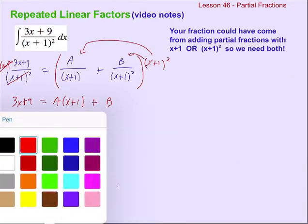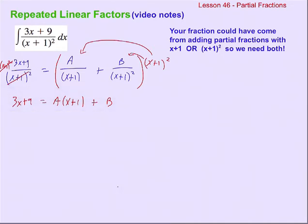We're going to use a similar strategy as before: pick a value for x that will zero out one of the constants so we can solve for the other. We see the factor x plus one, which means if x equals negative one, that factor would zero out. So we let x equal negative one and plug everything in. That's negative three plus nine, which is six, equals A times zero — that's the whole point — plus B. So B equals six.